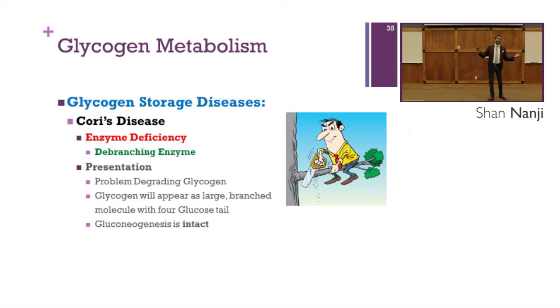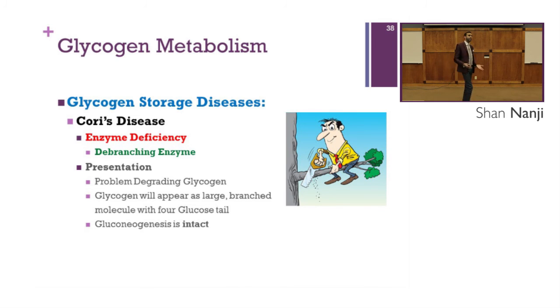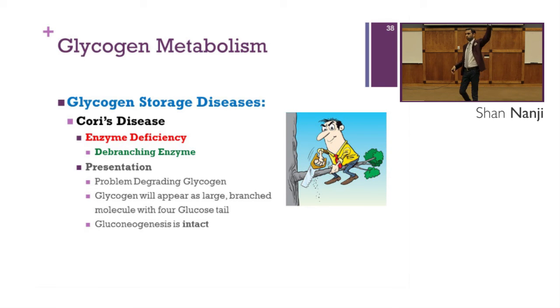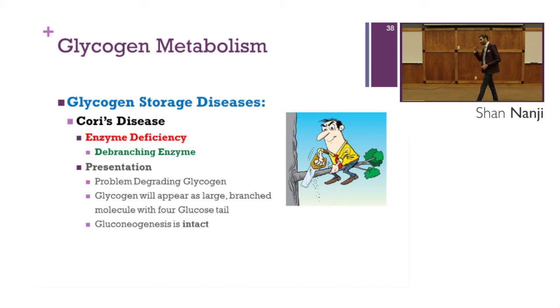Cory's disease: the enzyme deficient is the de-branching enzyme. The problem is difficulty degrading glycogen, so glycogen appears as a large branched molecule with a four-glucose tail. However, gluconeogenesis is intact, making this milder than Von Gerke's disease because some glycogen can still be broken off.